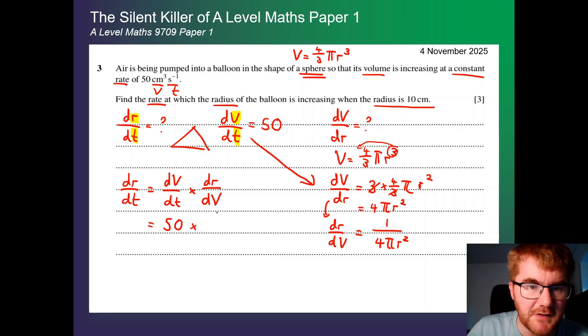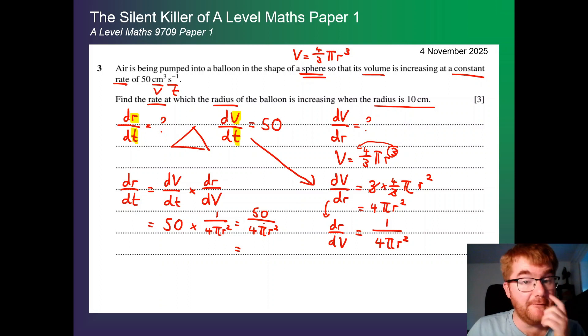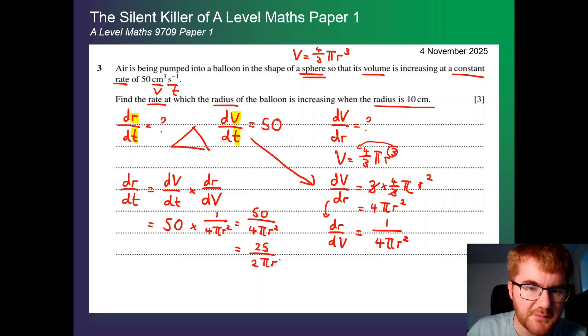So we have 50 times 1 over 4 pi r squared. And we can simplify this down to 50 over 4 pi r squared. And again, this simplifies again. So we know that 2 goes into both here, so we can get 25 over 2 pi r squared.